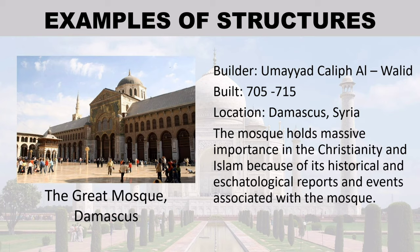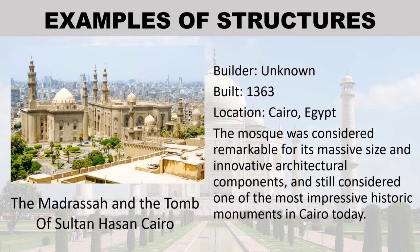The Great Mosque of Damascus, built by Umayyad caliph Al-Walid. The mosque holds massive importance in both Christianity and Islam because of its historical and eschatological reports and events associated with it. The Madrasa and the Tomb of Sultan Hassan, Cairo, built approximately 1363, located in Cairo, Egypt. The mosque is considered remarkable for its massive size and innovative architectural components, and is still considered one of the most impressive historic monuments in Cairo today.